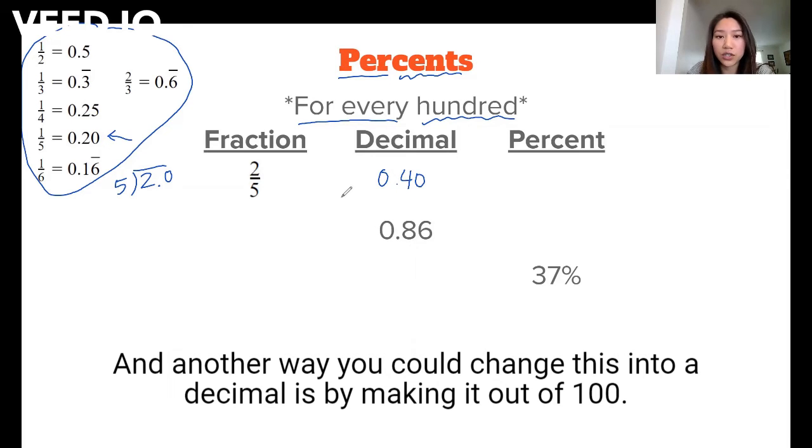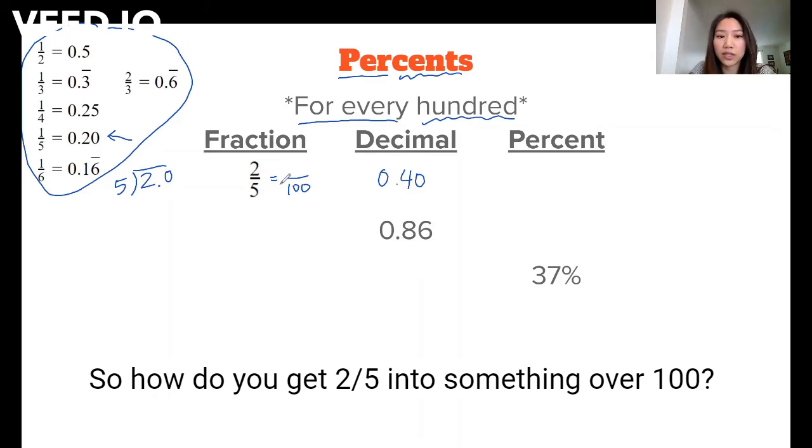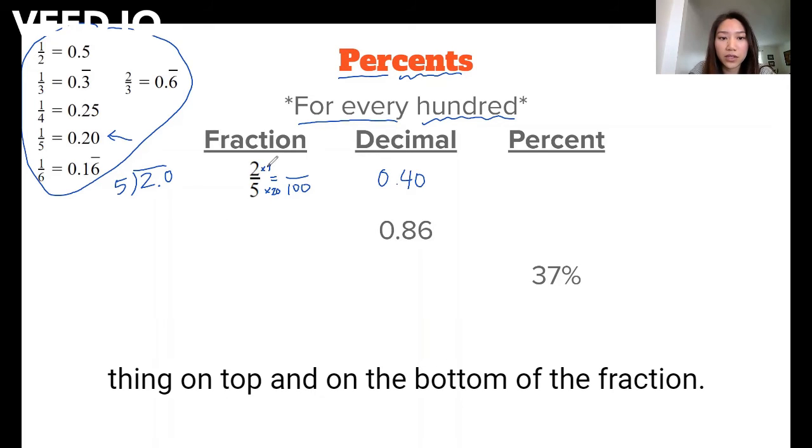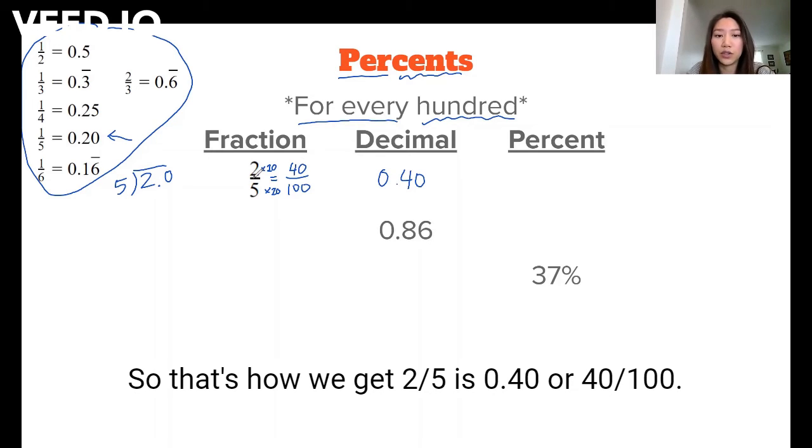And another way you could change this into a decimal is by making it out of a hundred. So how do you get two-fifths into something over a hundred? You could think about, okay, well, five times 20 gives us a hundred. And you have to do the same thing on top and on bottom of the fraction. So two times 20 gives us 40. So that's how we get two-fifths is 0.40 or 40 over a hundred.